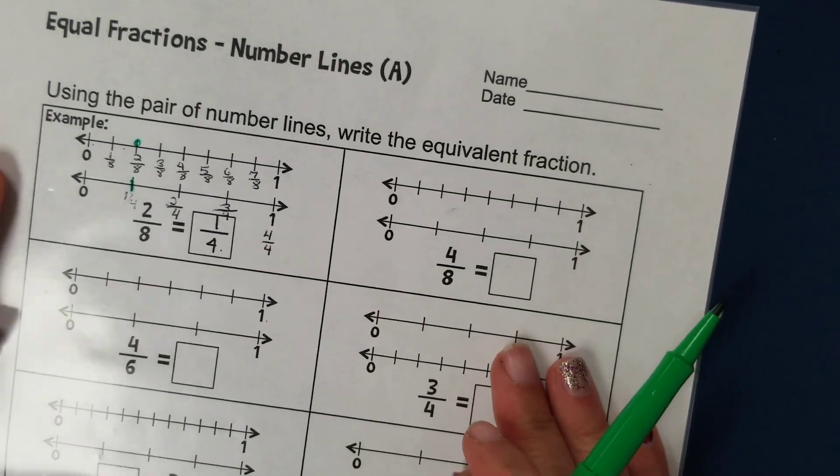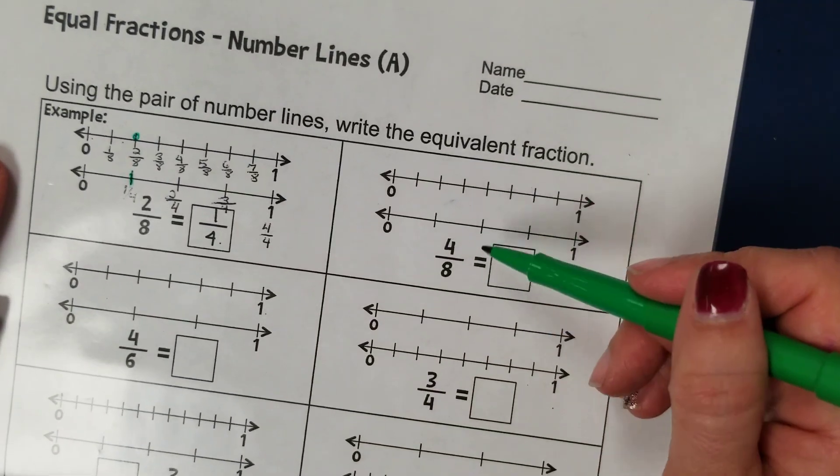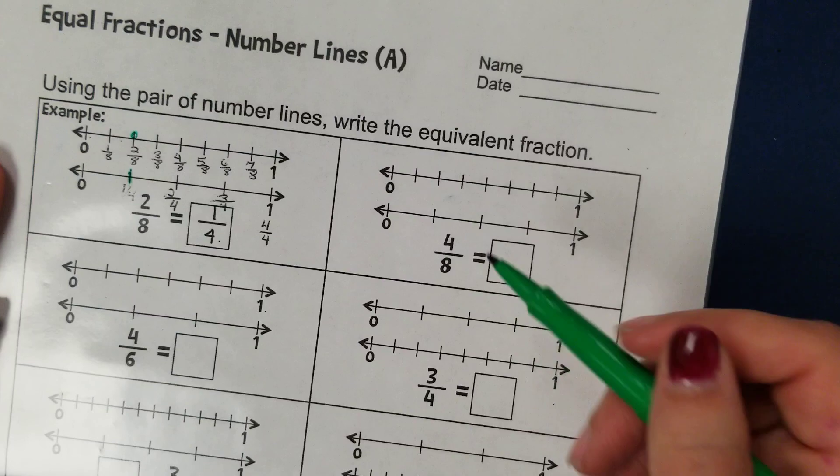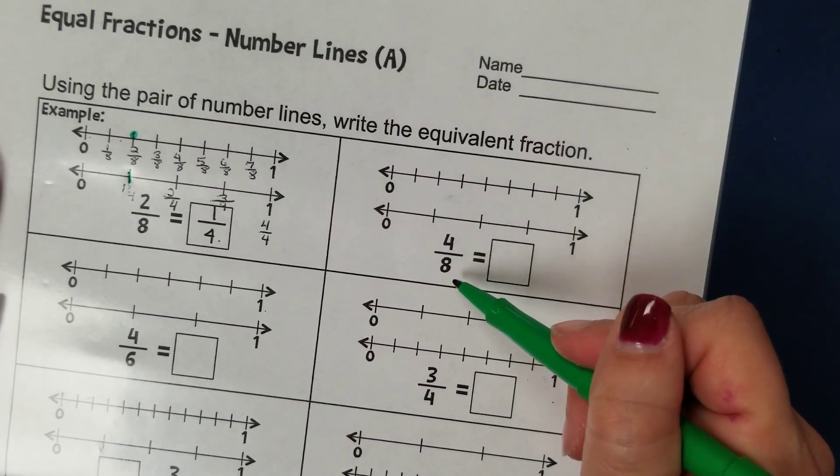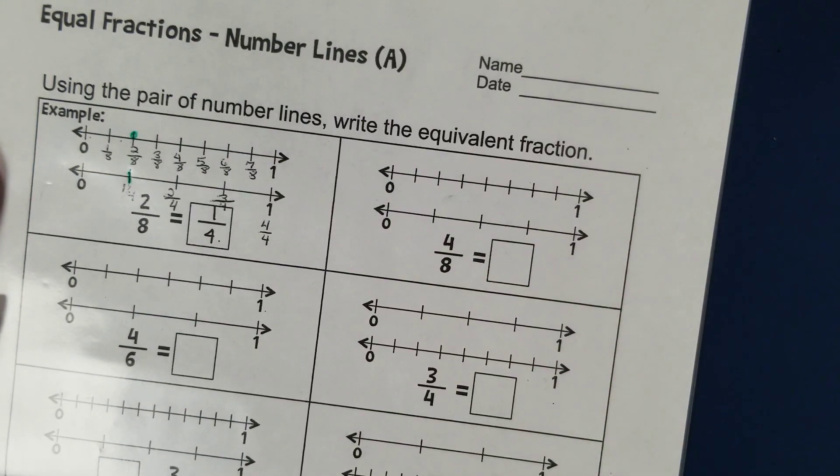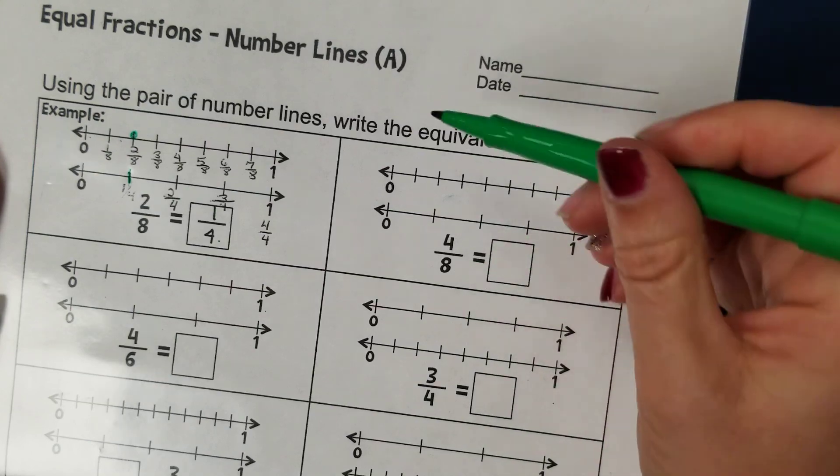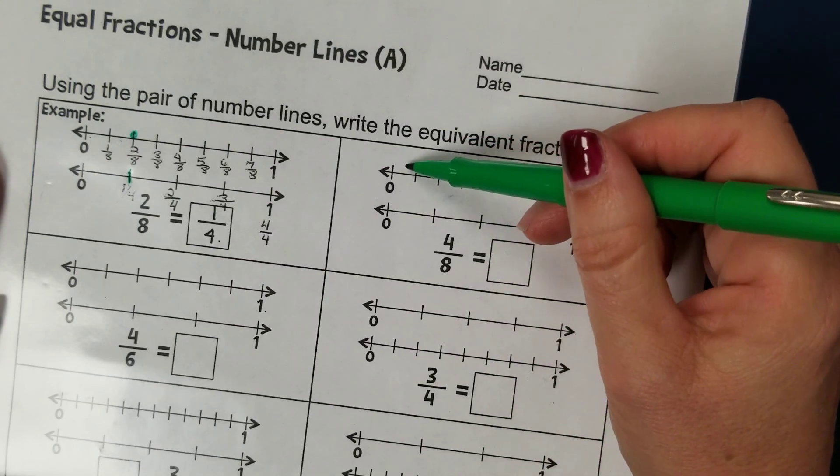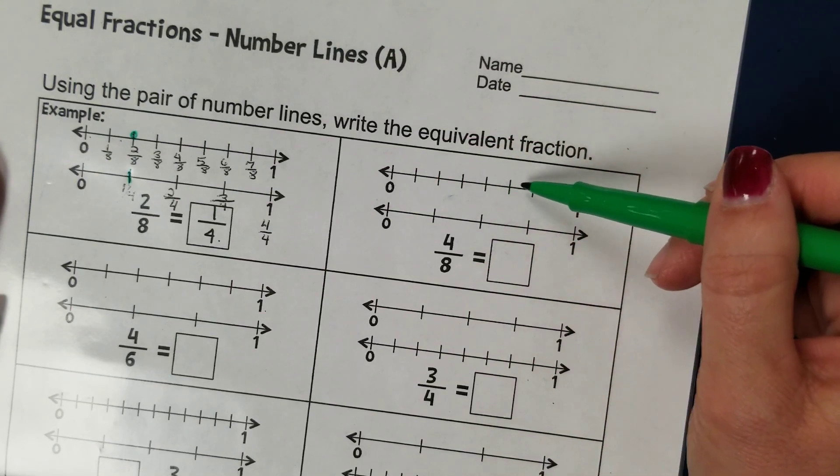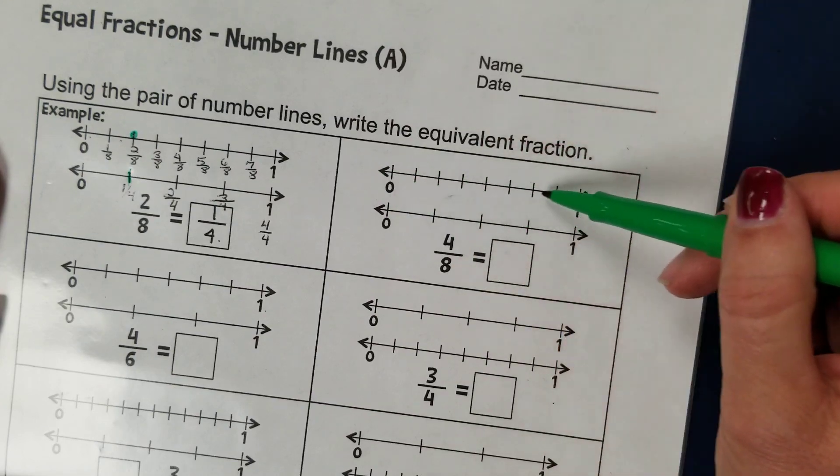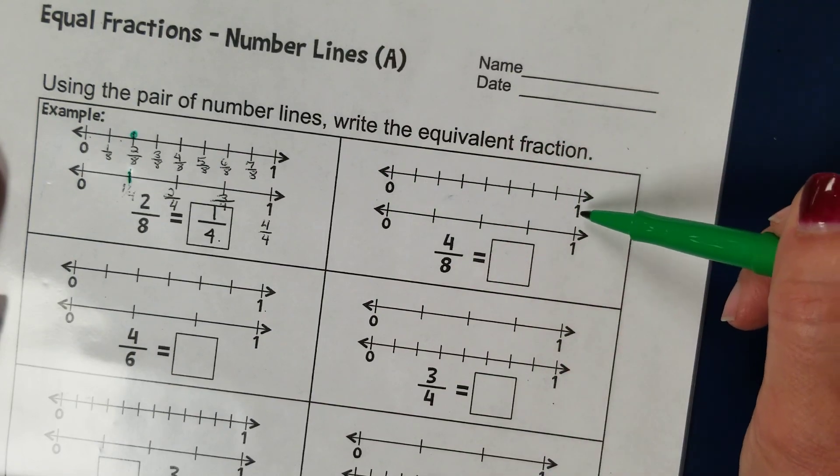Okay, let's try the next one together. So they've given us again two number lines, and they told us that they want us to look at the four-eighths on that first number line. Again, they got the eight in the denominator because they counted the number of pieces that is broken into between zero and one.